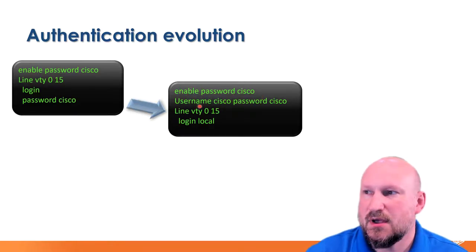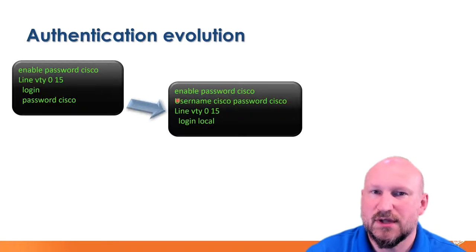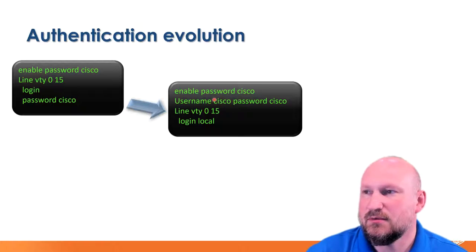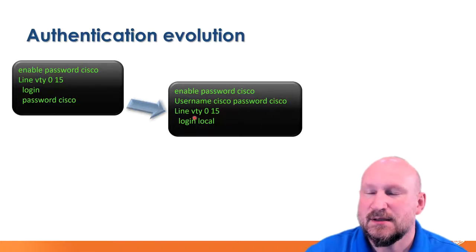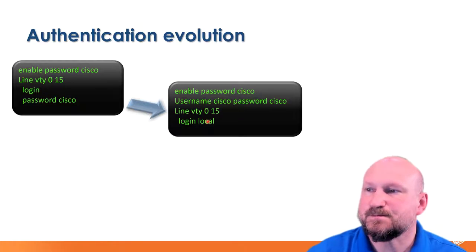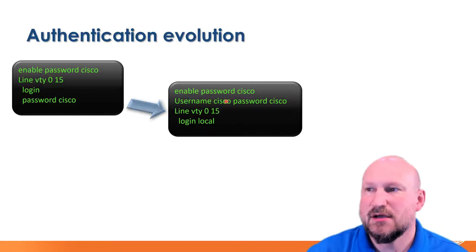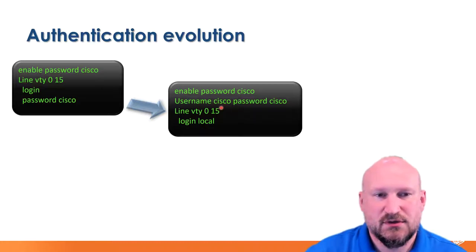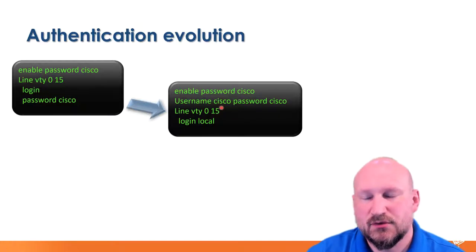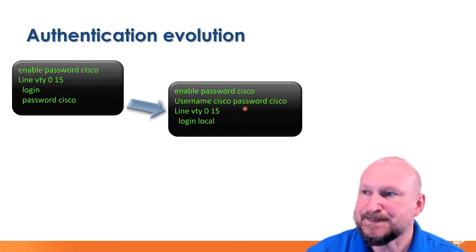The evolution from that is username/password. You still have privilege escalation via enable password, but you also put usernames into the local user database — username Cisco, or user1, user2, etc., with a password. Then under line VTY you say 'login local,' meaning use the local database. You can also attach a privilege level directly to a username, specifying privilege 0, 1, or 15.